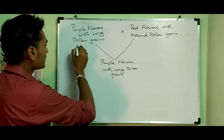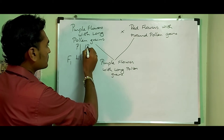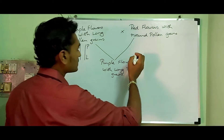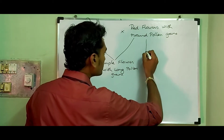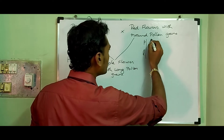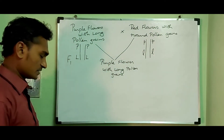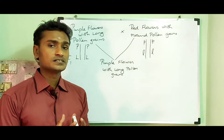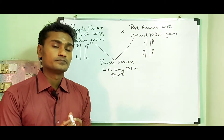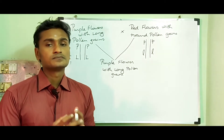The genotype of purple flower with long pollen grain is written as capital P capital L capital P capital L (PLPL), while red flower with round pollen grain is written as small p small l small p small l (plpl).